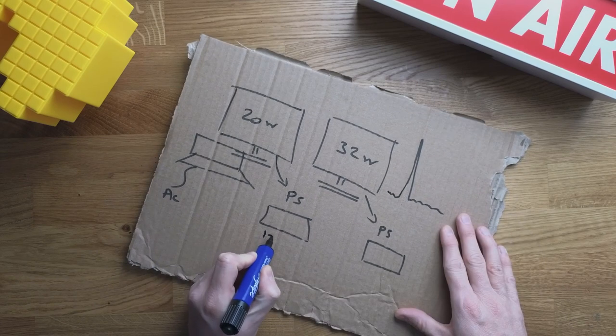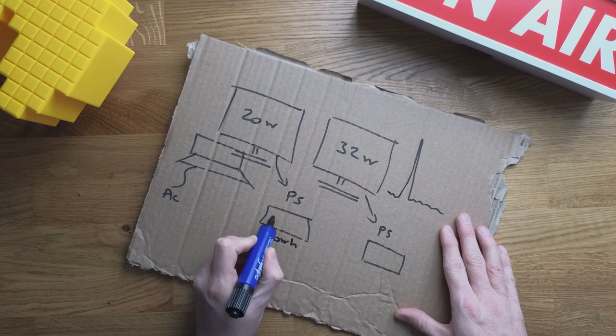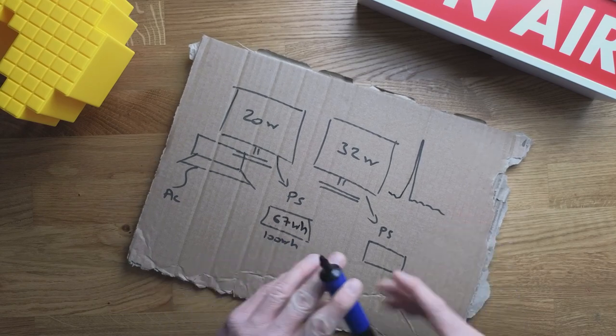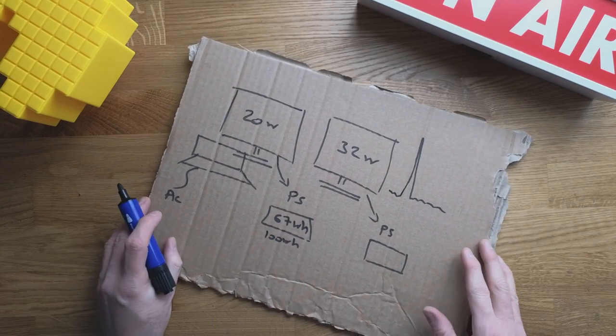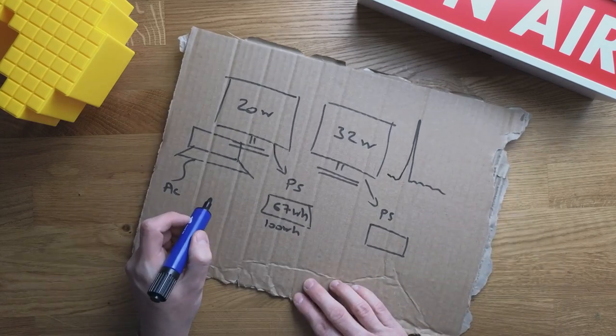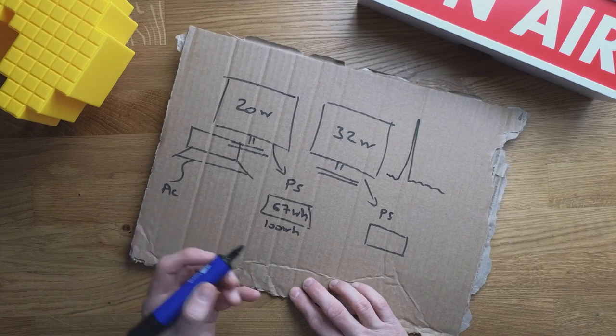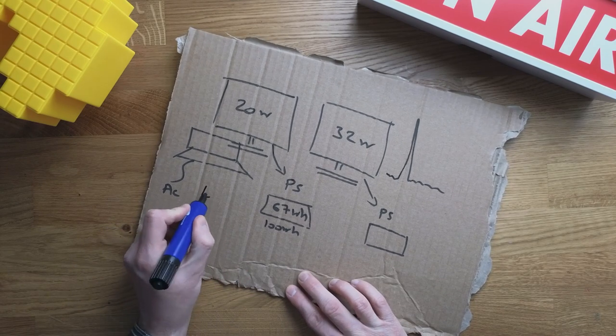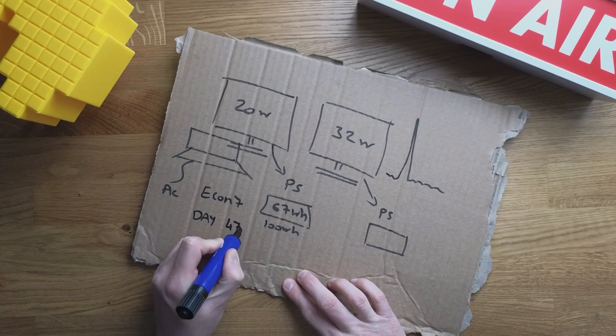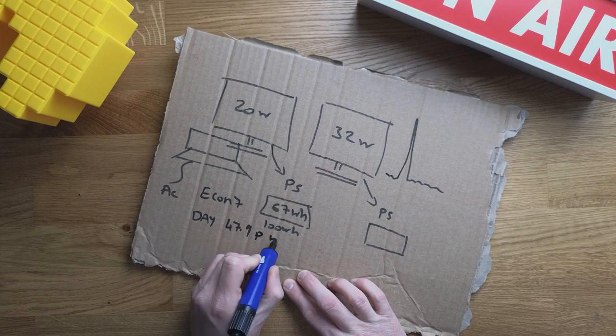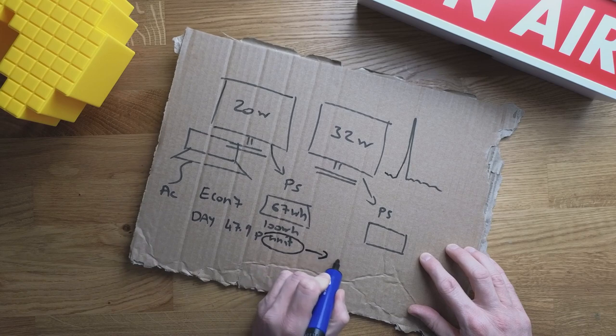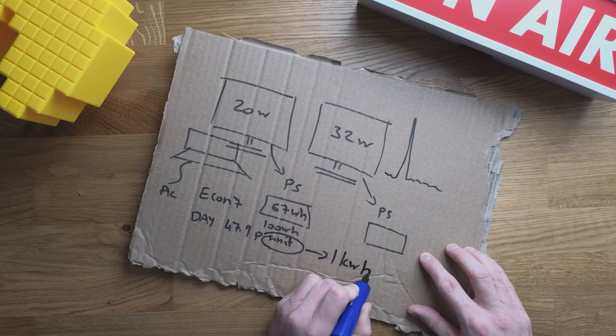This 100 watt hour power station, we're actually going to say using on AC, we're going to say it's got 67 watt hours, because it's not as efficient as the manufacturer claims. So we're going to say 67 watt hours. Now in the UK, what do things cost? I'm in April at the moment, I have economy seven. Economy seven in the day costs 47.9 pence per unit. And what is a unit?